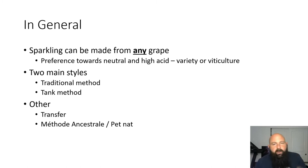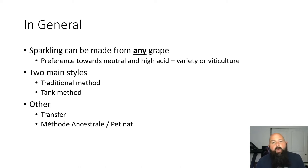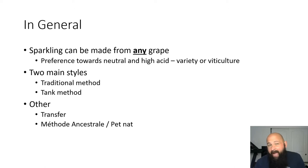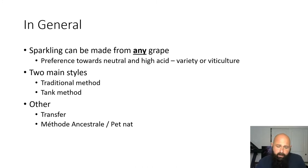The primary reason the variety itself doesn't matter is that you're picking grapes so early to make a neutral base wine that there isn't much flavor development. We're picking them at somewhere between 16 and 20 Brix, which means the fruit hasn't fully developed. Basically we're just trying to get acid, water, and a little bit of sugar — that's what's really nice about sparkling wine.